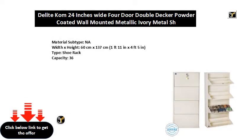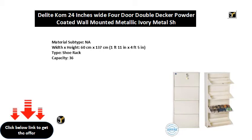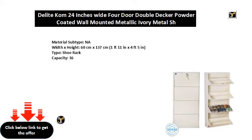Material subtype: N.A. Width x Height: 60 cm x 137 cm (1 foot 11 in x 4 feet 5 in). Type: Shoe Rack. Capacity: 36.